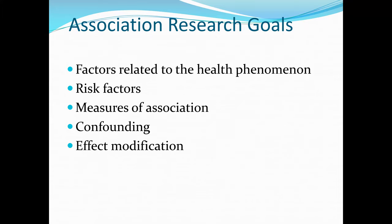Next we move to association research goals. In statistics, association between two variables doesn't mean causality. For example, there may be an association between ice cream sales and shark attacks in Florida, but buying ice cream doesn't cause shark attacks. In this case, a third variable — weather — is at play: when the weather is warm, ice cream sales increase and shark attack incidents also increase. This is what we call a confounding variable, a third variable causing distortions.